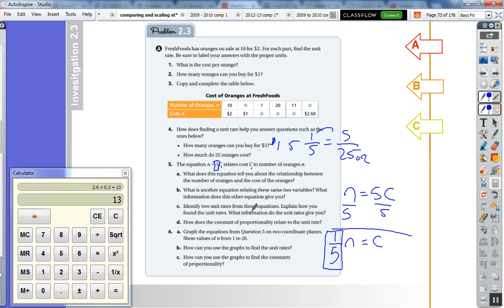Identify the two unit rates from these equations. Explain how you found the unit rates. I think I talked about that already. How does the constant of proportionality relate to the unit rate? The constant of proportionality is the unit rate.